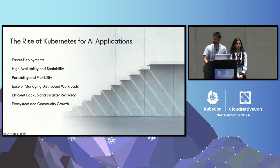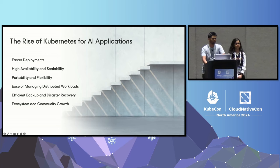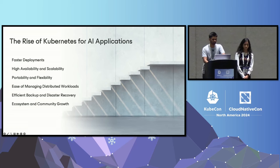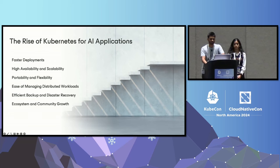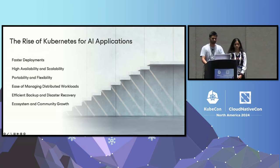Dynamic scaling also helps with optimized resource management and cost. Kubernetes is cloud-agnostic, so AI applications can run on any cloud, any environment, even on-prem, without needing changes when moving between environments — enabling portability. It's very useful for multi-cloud or multi-vendor requirements. There's also strong support for backup and disaster recovery, which makes it easier to deploy mission-critical applications. With the growth of the community and a growing ecosystem of projects, it's becoming an ideal platform for AI workloads.